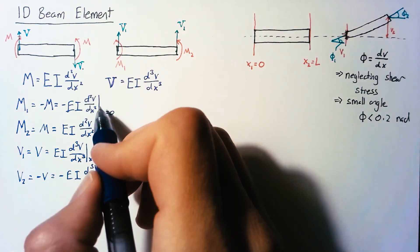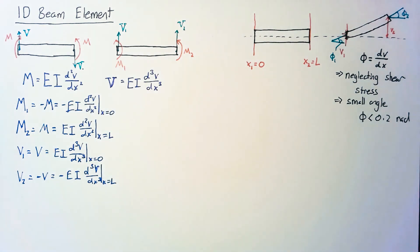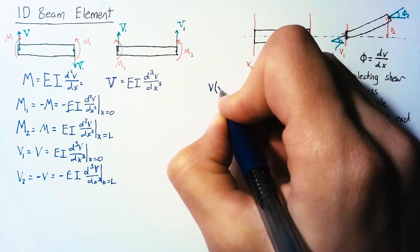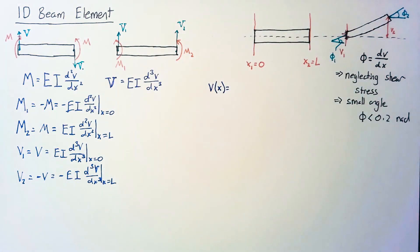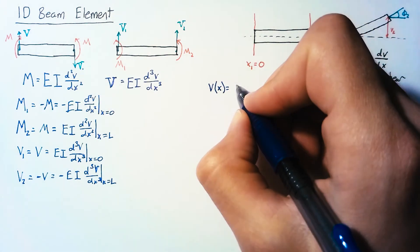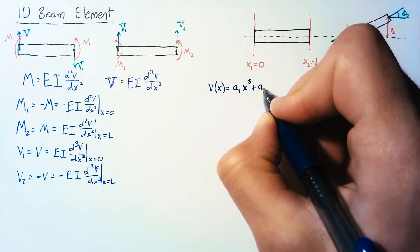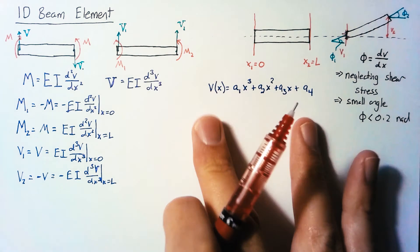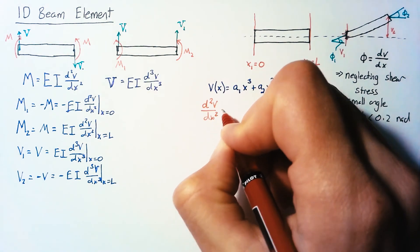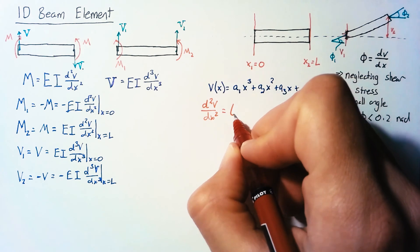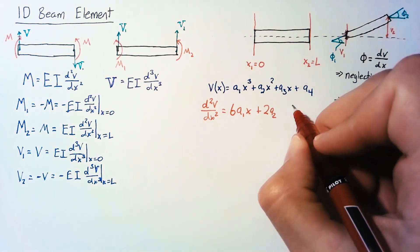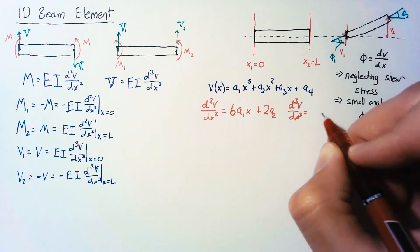In order to move forward, we need to define v. We're going to do this with the assumed solution method, where we say that our displacement as a function of x is going to be equal to a cubic polynomial. We could choose any function here — this is called a shape function — but the cubic polynomial is the standard solution. We then take the second derivative, which gives us 6 times a1 times x plus 2 times a2, and the third derivative, which is just 6 times a1.